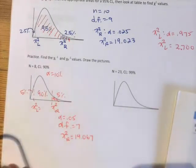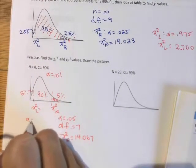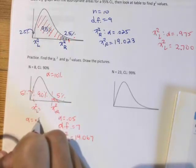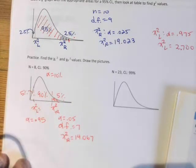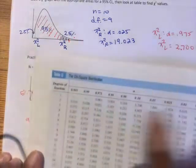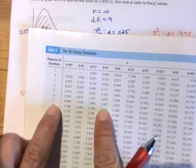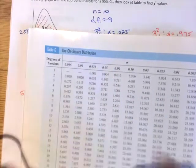Then to find your chi-square left, that alpha value is the 90 plus the 5, so .95. Degrees of freedom are still 7, so .95 down to the 7, 2.167.